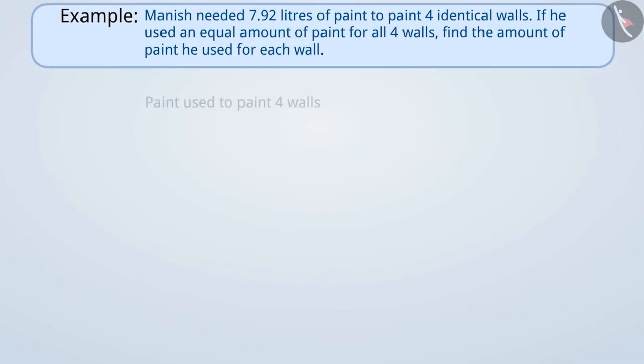The example shows that Manish painted 4 walls, for which he required a total of 7.92 litres of paint. To find out how much paint was used to paint one wall, we have to divide 7.92 by 4.